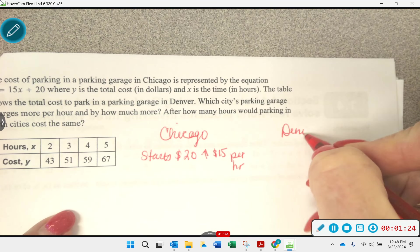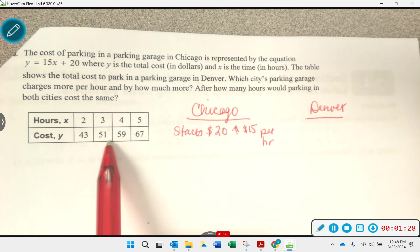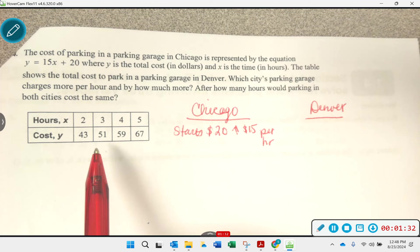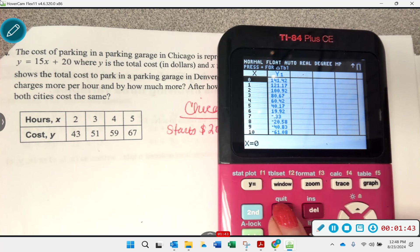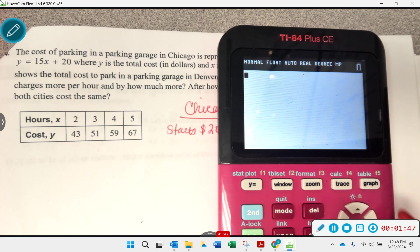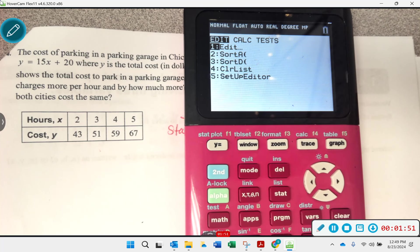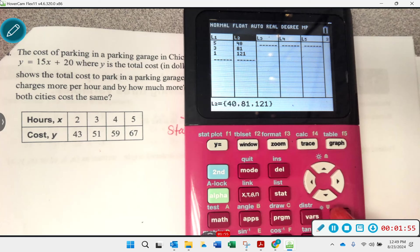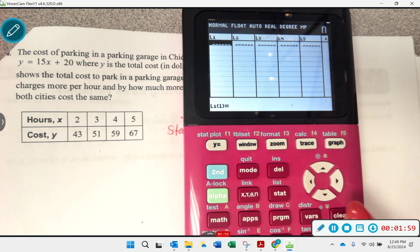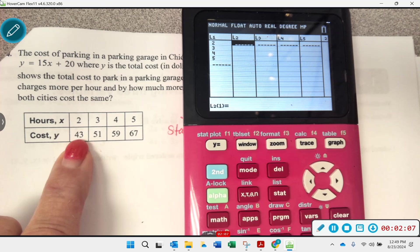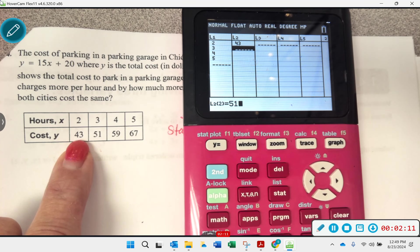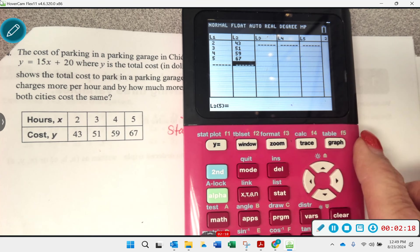All right, then we have Denver. Well, Denver, they just gave us a whole bunch of data, right? So a good way to approach Denver might be to use our calculator and come up with an equation. So let's go ahead and do that. I'll review that with you. So I'm going to get out of here by doing a second mode to quit, clearing out my screen. I'm going to go to stat, edit. I'm going to go up to the very top and clear. X is my hours: 2, 3, 4, 5. Y is our cost: 43, 51, 59, and 67.